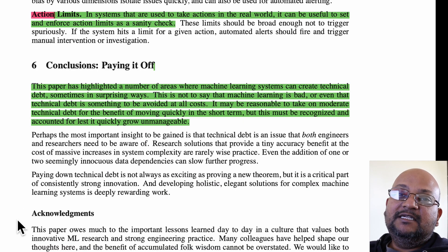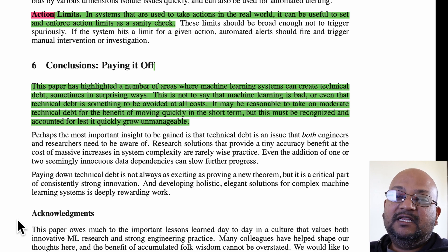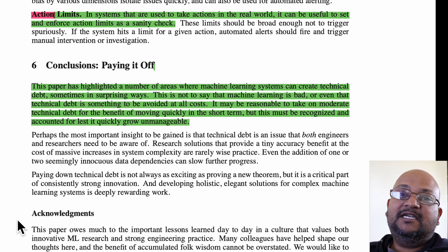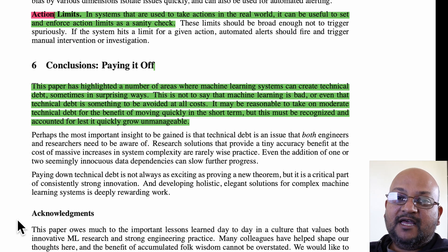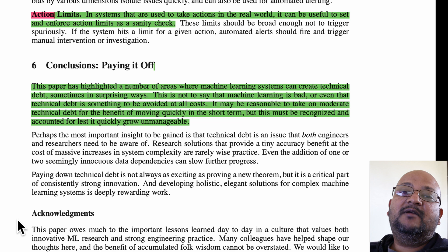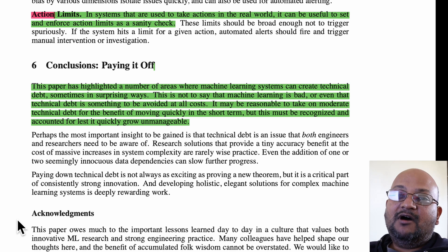To conclude, this paper has talked about a number of pitfalls and ways in which you can add technical debt to a machine learning system, making maintaining and evolving that system more and more painful over time. The authors don't mean to suggest that machine learning is bad or that you should avoid technical debt at all costs and always aim for technical perfection — that's just not realistic. This is meant to be a catalog of anti-patterns so you can watch out for them, and be aware of them so that later in the life of your system, you can carve out some time to clean them up.